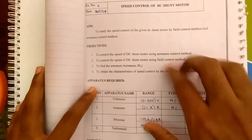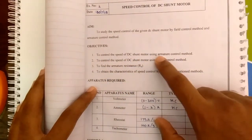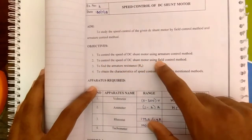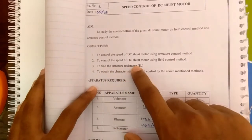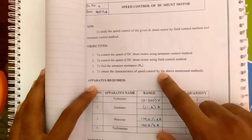The objective of this experiment is to control the speed of DC shunt motor using armature control method and to control the speed of the DC shunt motor using field control method, and to find the armature resistance and to obtain the characteristics of speed controlled by the above mentioned methods.